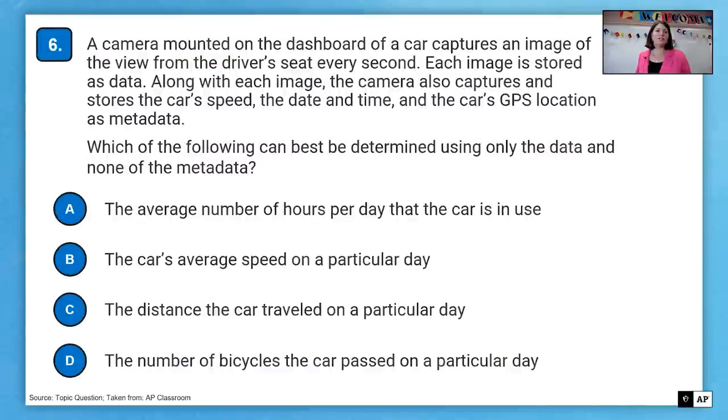All right, question number six. If you ever need to read the question, you can always pause the video as well. A camera mounted on the dashboard of a car captures an image of a view from the driver's seat every second. Each image is stored as data. Along with each image, the camera also captures and stores the car's speed, the date and time, and the car's GPS location as metadata.